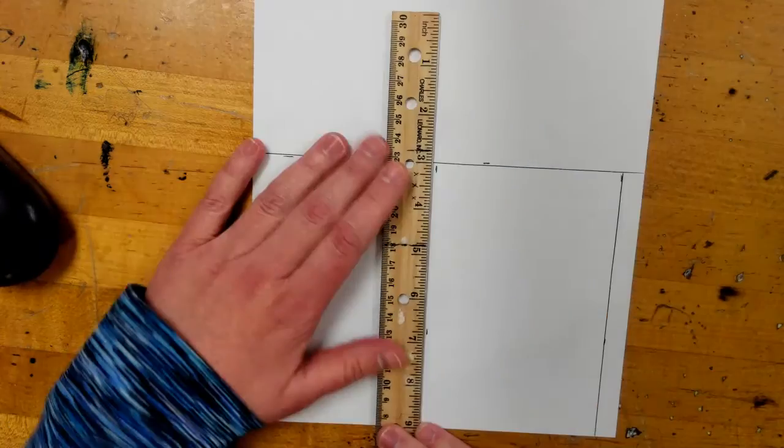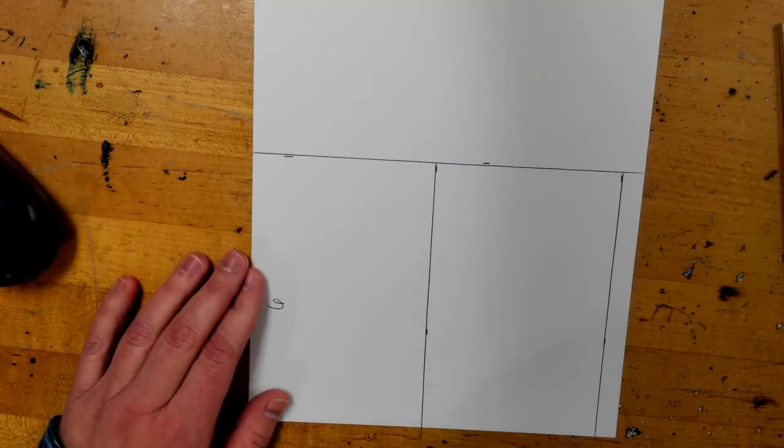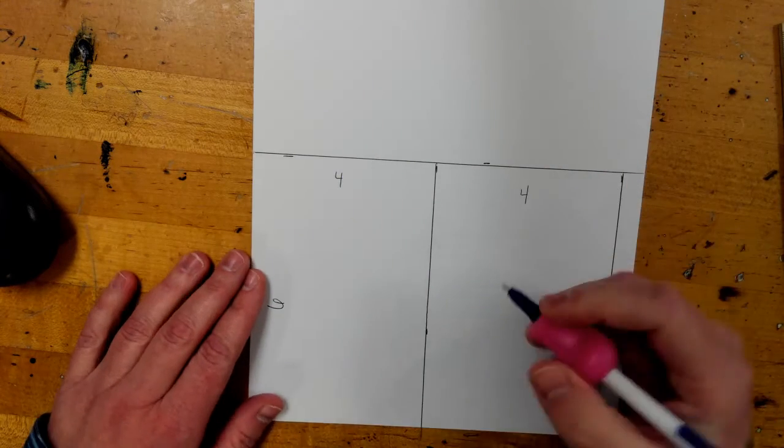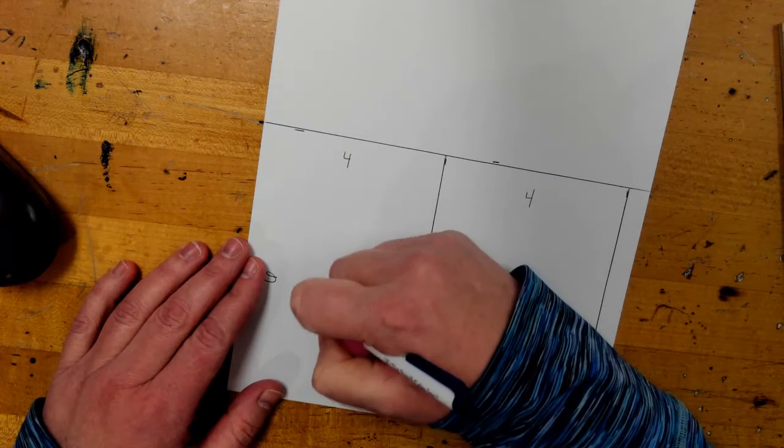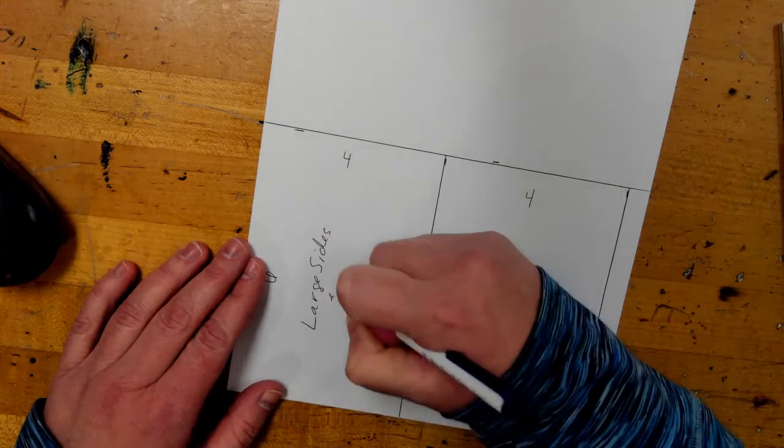And then move my ruler over and do the same thing. Okay, so now this is four inches and four inches. And then I'm going to label what these are. So, I'm going to put large sides and lid.